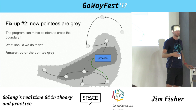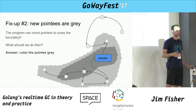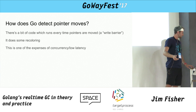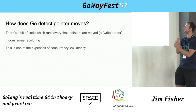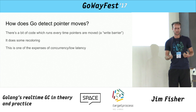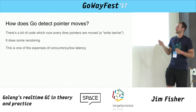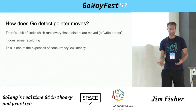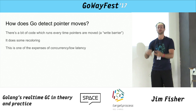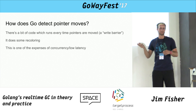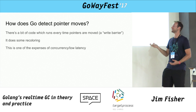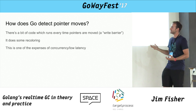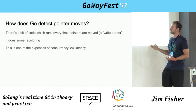Those are the only two rules needed to make mark and sweep concurrent. One implementation detail: you might wonder how Go detects pointer moves. The answer is a write barrier — a bit of code compiled into every place where your process can move a pointer, which performs this recoloring logic to move things into the grey set. Notably, mark and sweep doesn't need a write barrier, but to make it concurrent you do, and it causes extra work which reduces throughput — another example of the tradeoff.